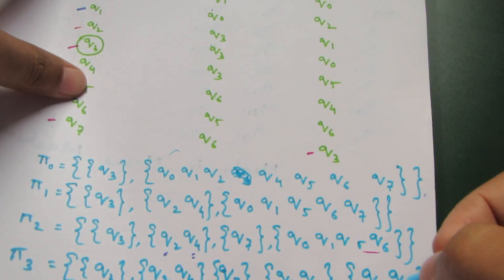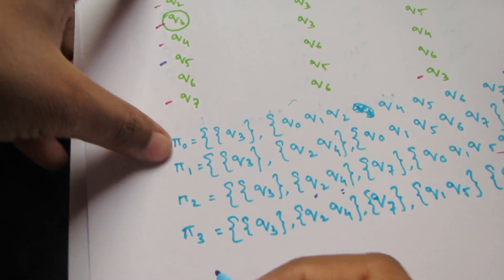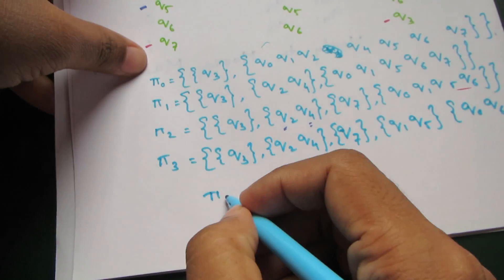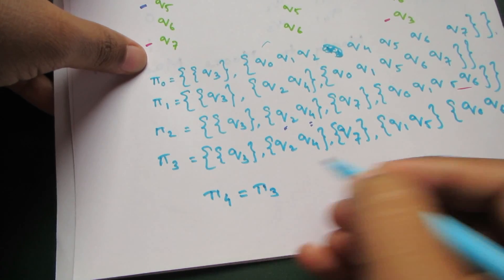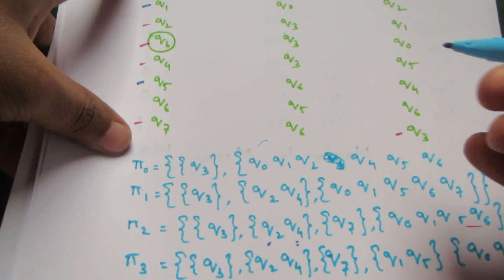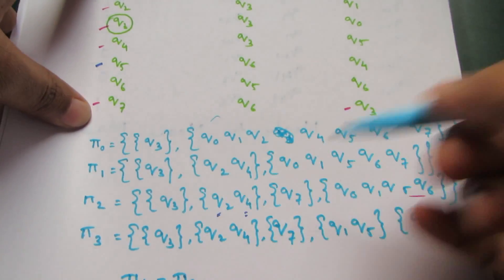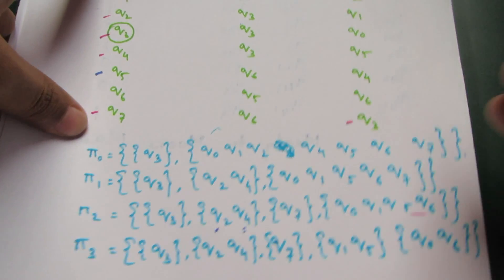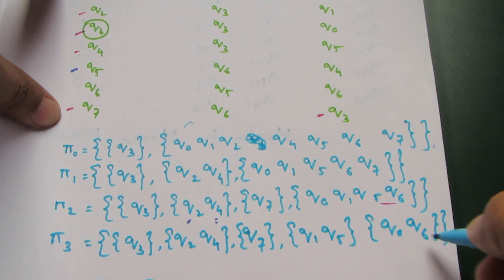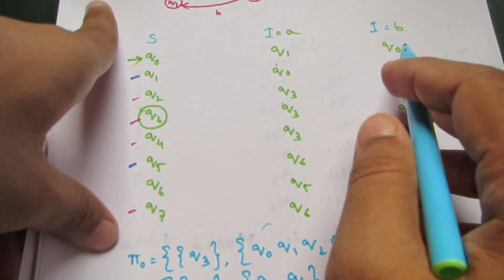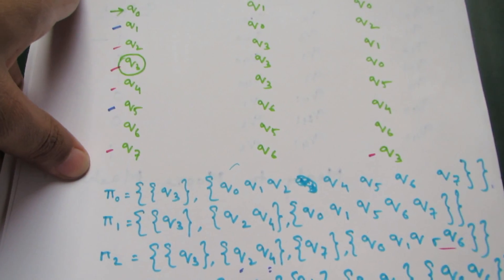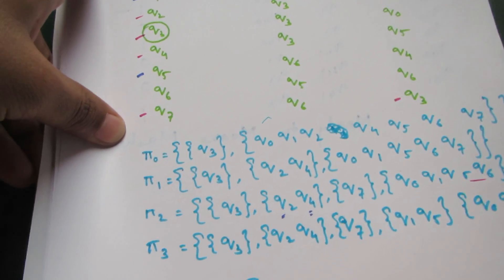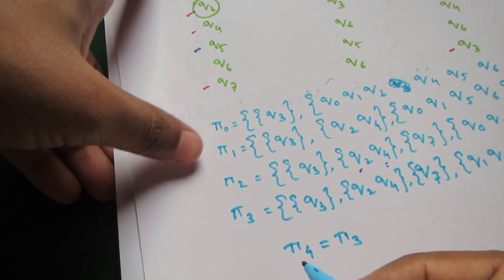π4 equals π3 since none of the groups can be divided further. If you check Q0 and Q6 again, Q0 on A goes to Q0 within this group and Q6 on A goes to Q6 within this group, so they remain together. The minimization is complete.